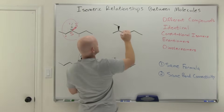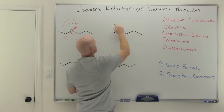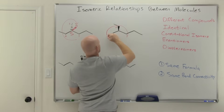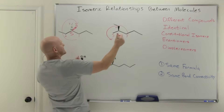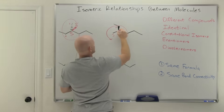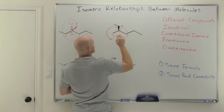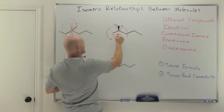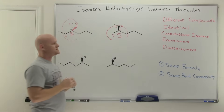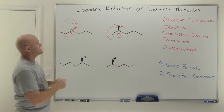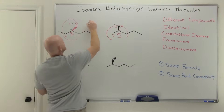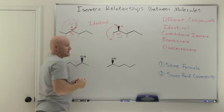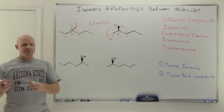Doing the same on the other structure: priority one, two, three give a left-handed turn, and the hydrogen not drawn in is in the back. A left-handed turn with the lowest priority in the back means S. So both are S-3-methylhexane — they are identical.